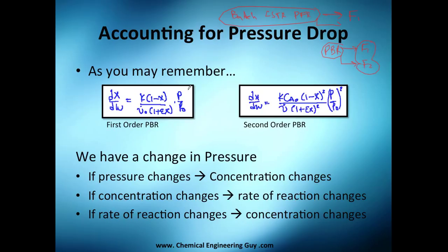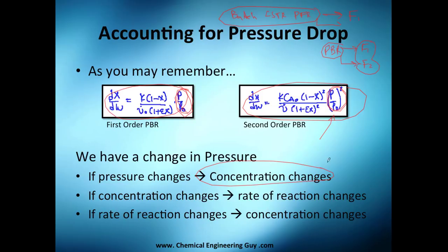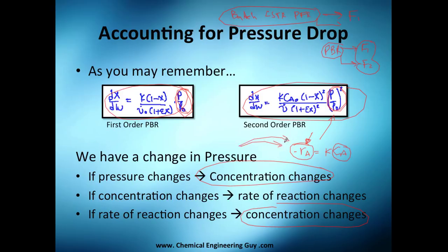From the previous video we got two important equations. This is very important because it changes as conversion changes. If pressure changes, concentration changes — you can see this in our stoichiometric tables. If concentration changes, the rate of reaction changes. The rate of reaction depends on concentration of A, so if concentration changes, the rate changes. As volume increases, conversion increases, and concentration changes — it's essentially a cycle.